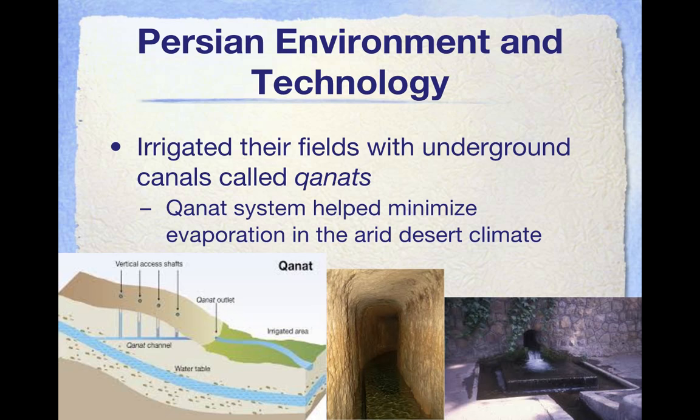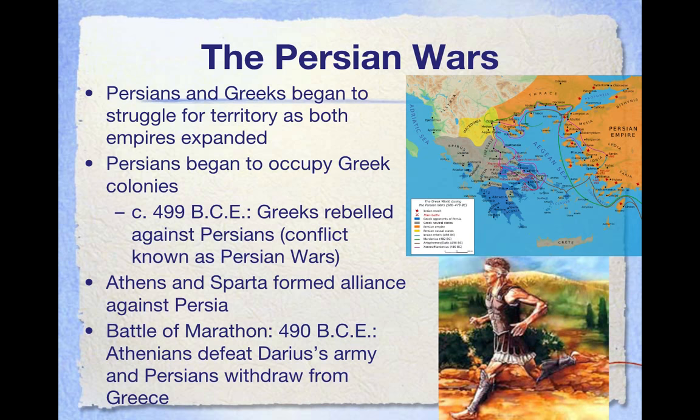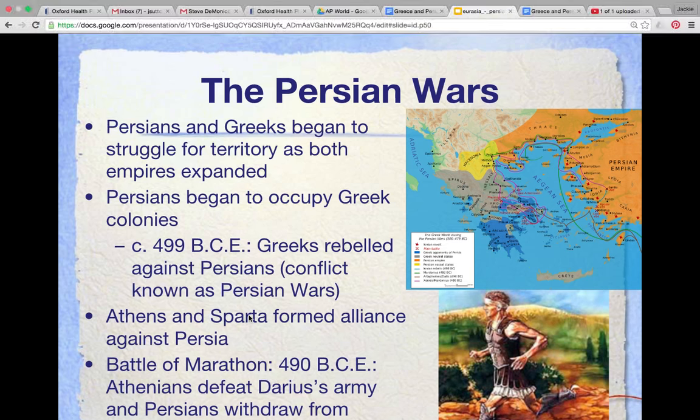So those are the Persians in outline. In the next video, we're going to combine our knowledge of Greece and Persia to understand why these two societies come into conflict with one another and how the end of that conflict is going to result in the future development of both Greece and Persia. Stay tuned for that.